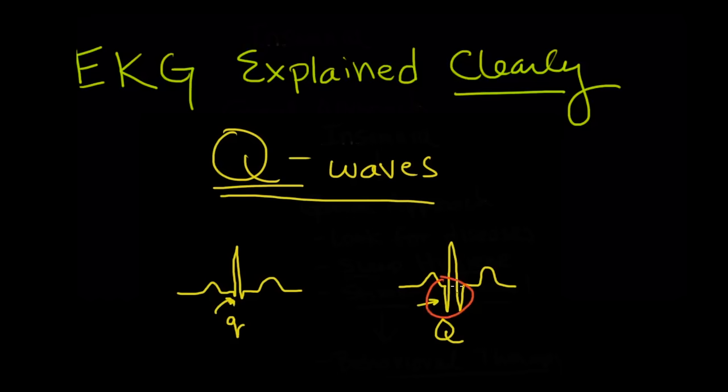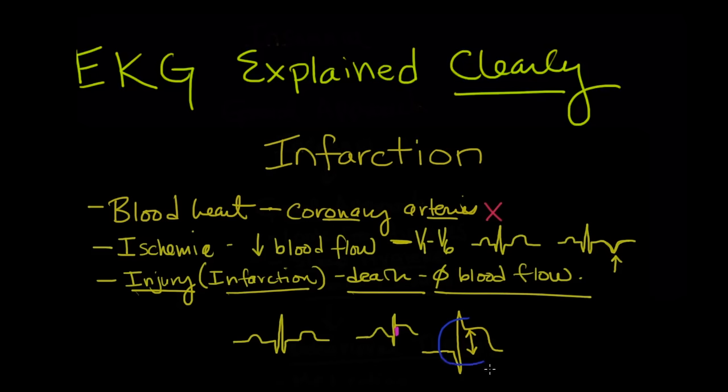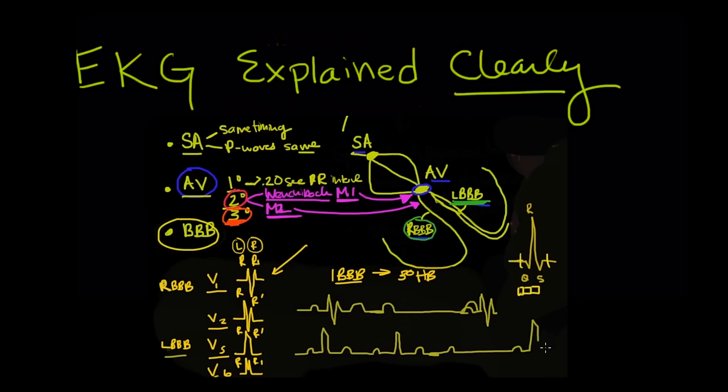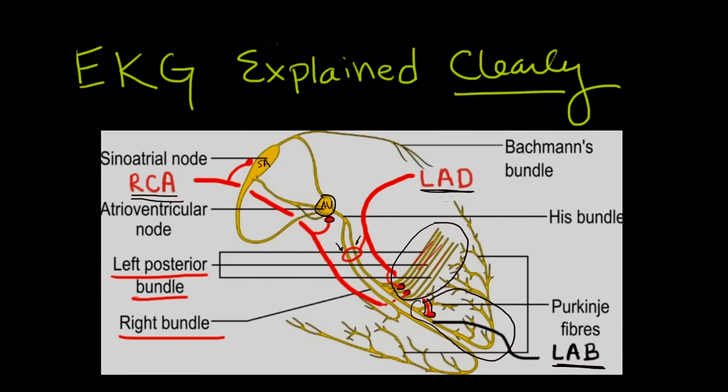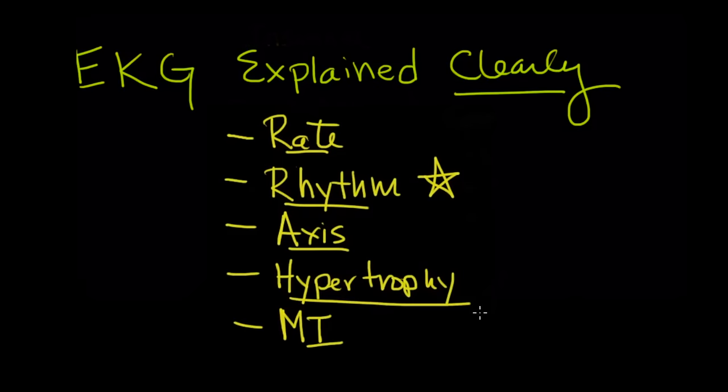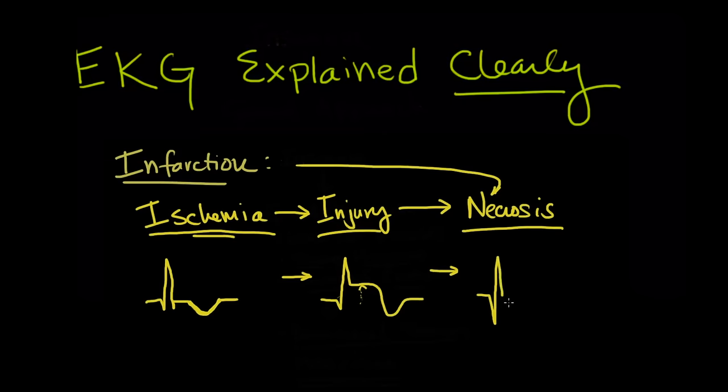We'll talk about Q waves, ST segment and T wave changes that we see with ischemia, bundle branch blocks and fascicular blocks, and then at the end we'll put it all together and teach you how to systematically read an EKG.